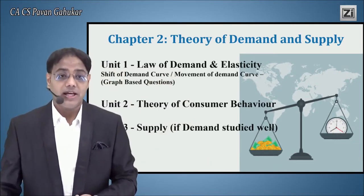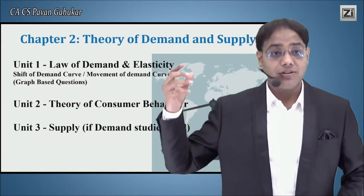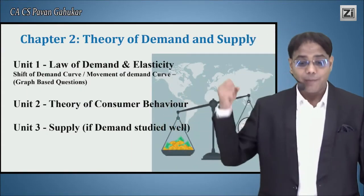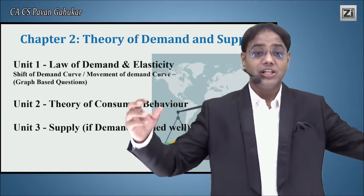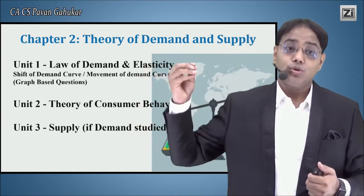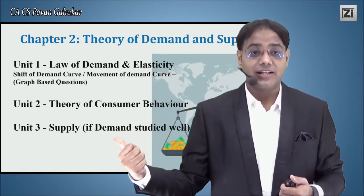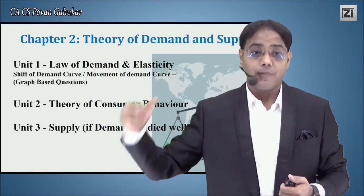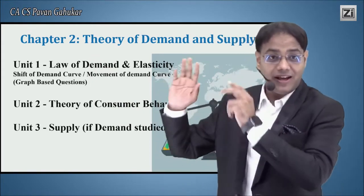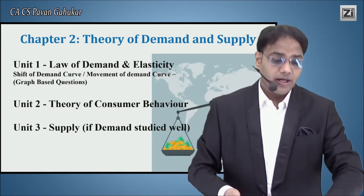Chapter 2, Theory of Demand and Supply, is important both in the marking scheme and content-wise. There are three units: the law of demand and supply, theory of consumer behavior, and supply. One good thing is that even though the chapter is huge, if you understand demand properly, supply is reciprocal — so once demand is ready, supply follows. The chapter also covers demand and elasticity extensively.